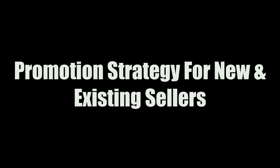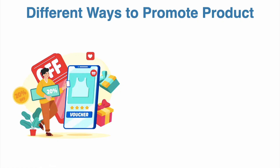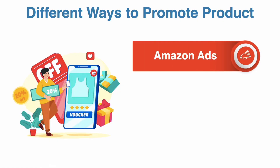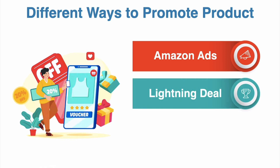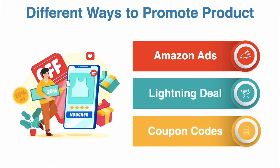If you are a new seller or an existing seller and you have listed your product on Amazon, and you want to promote your product on Amazon, then you have three types of promotions. First, you can promote your product on Amazon Ads. Second, you can promote your product on Lightning Deal. Third, the most important thing is Coupons.